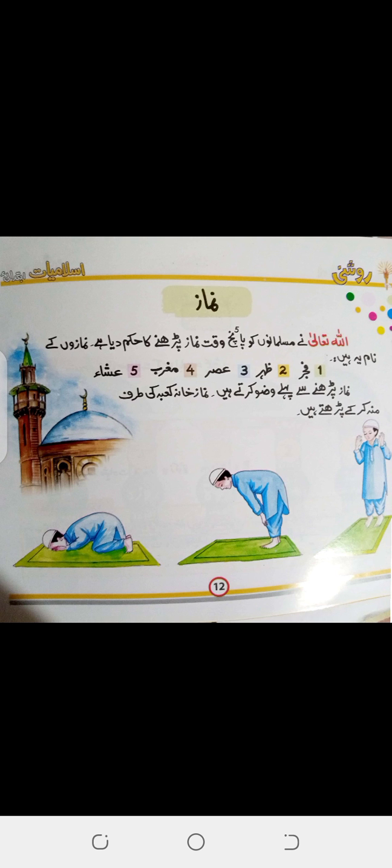کتنے وقت کی نماز ہوتی ہیں ہماری؟ ہمیں پانچ وقت کی نماز پڑھنے کا حکم دیا ہے۔ نمازوں کے نام: فجر، ظہر، عصر، مغرب، عشاء۔ نماز پڑھنے سے پہلے ہمیں وضو کرنا چاہیے۔ نماز خانہ کعبہ کی طرف منہ کر کے پڑھتے ہیں۔ یہ آپ نے گھر پر یاد کرنا ہے۔